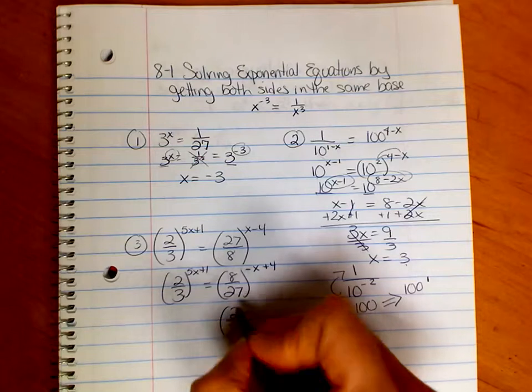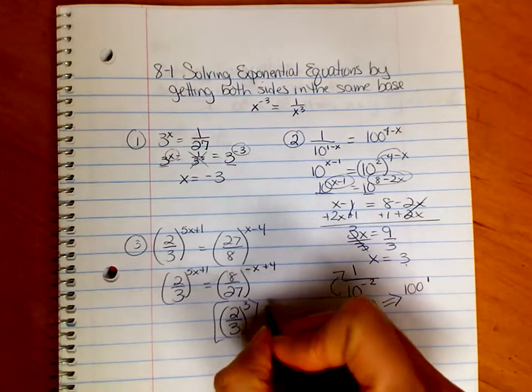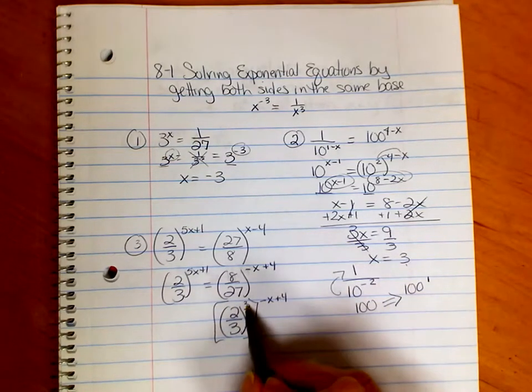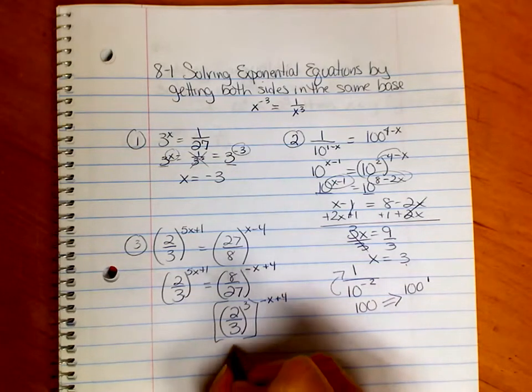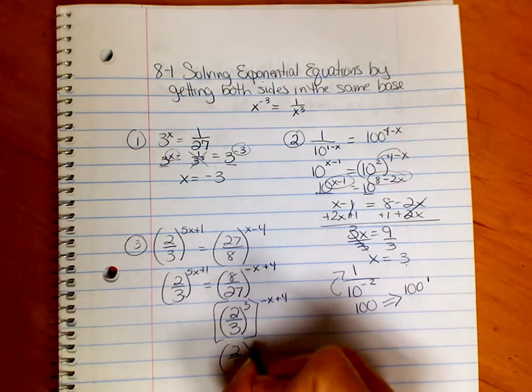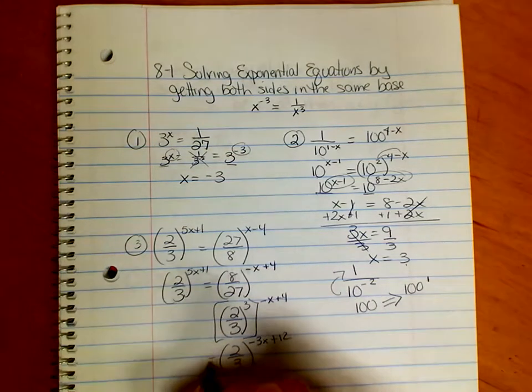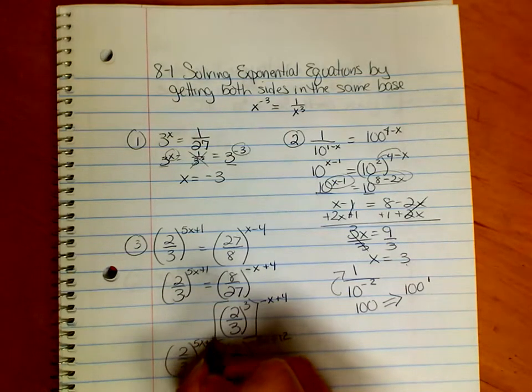So that means 8 over 27 is 2 thirds cubed. We'll put another kind of bracket. And then all of that is to the negative x plus 4. So when I have a power raised to a power, I multiply. So I have now 2 thirds to the negative 3x plus 12, and it equals 2 thirds to the 5x plus 1.